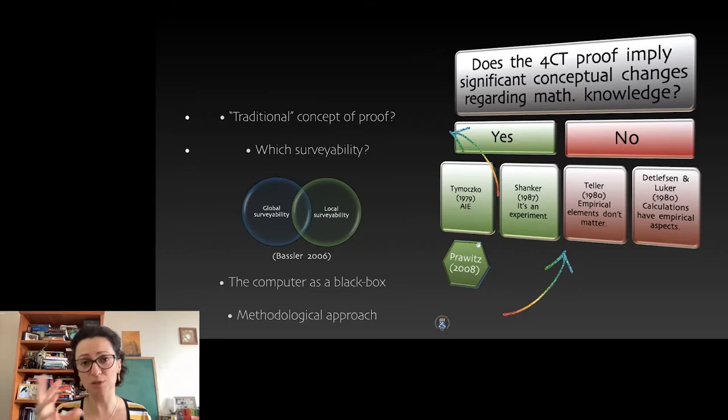So it's a mess, the problem also with the notion of surveyability, because he's ambiguous. Sometimes he talks about the step-by-step algorithmic surveyability, sometimes it seems like he is talking about this bird's eye view. So I used Bassler's distinctions here between global and local surveyability.